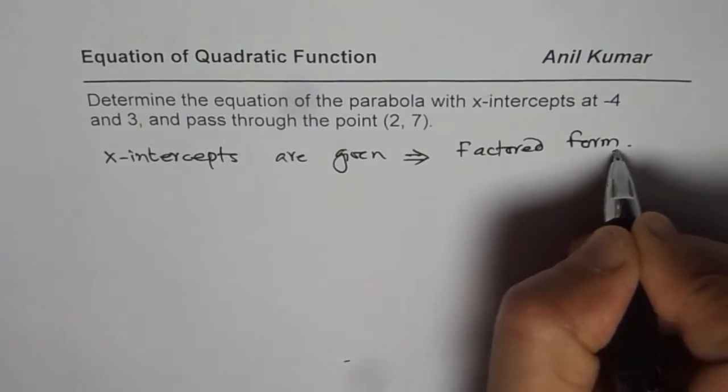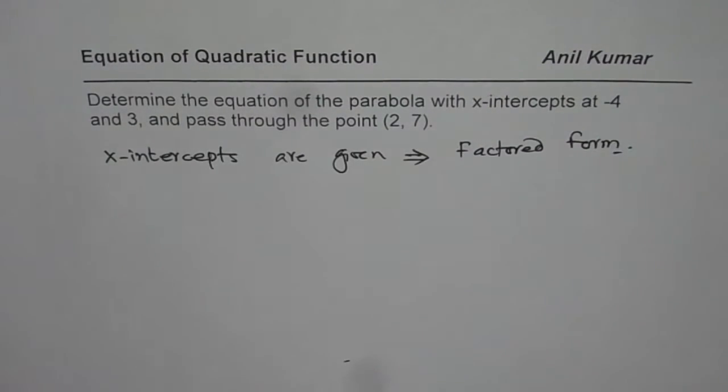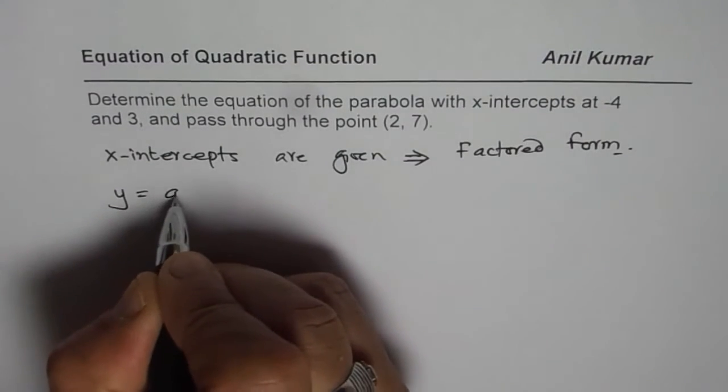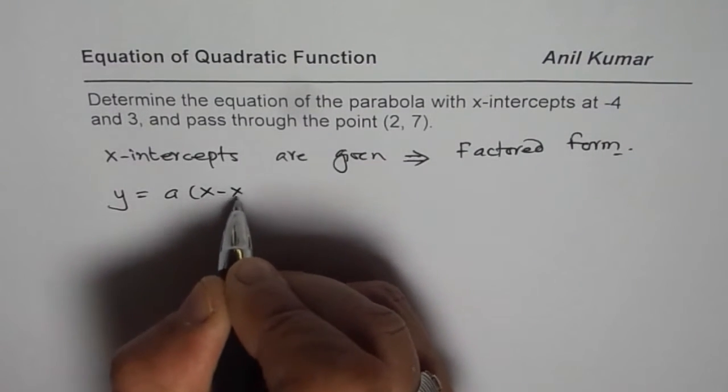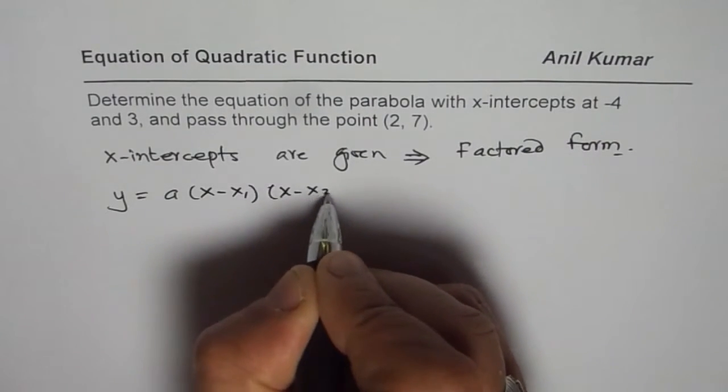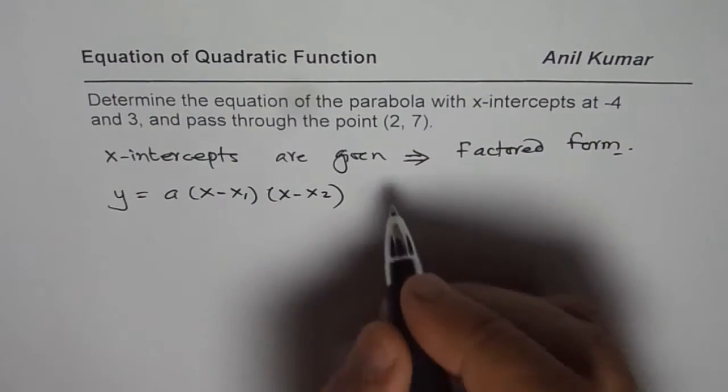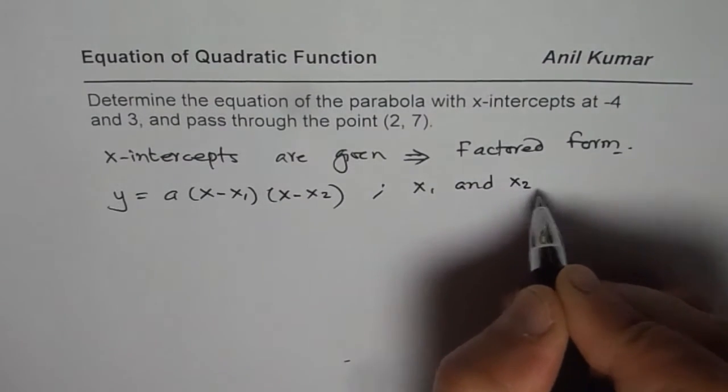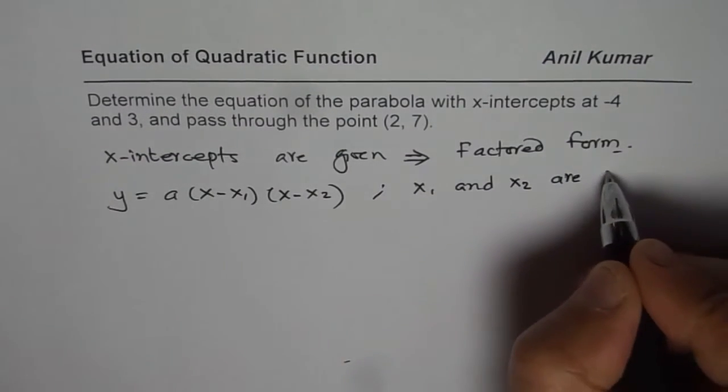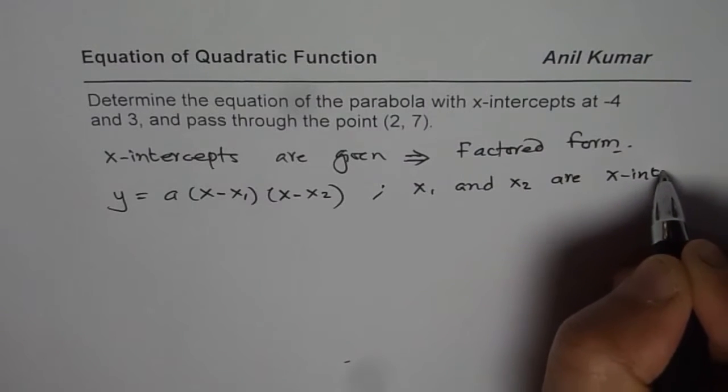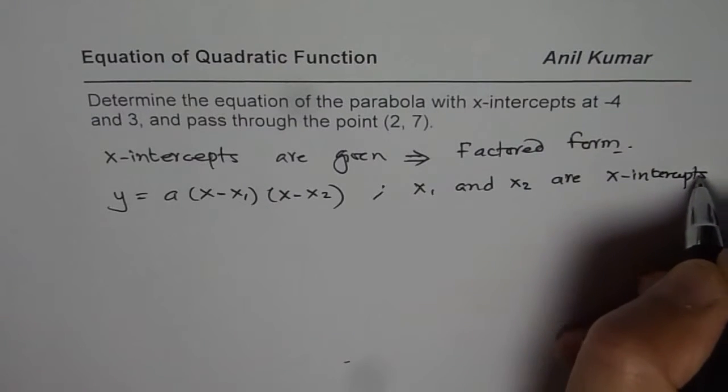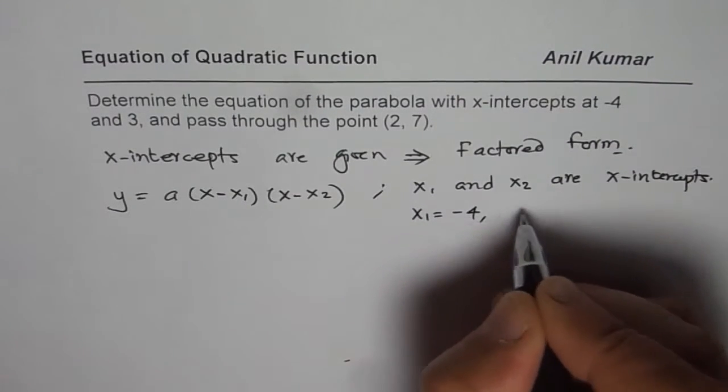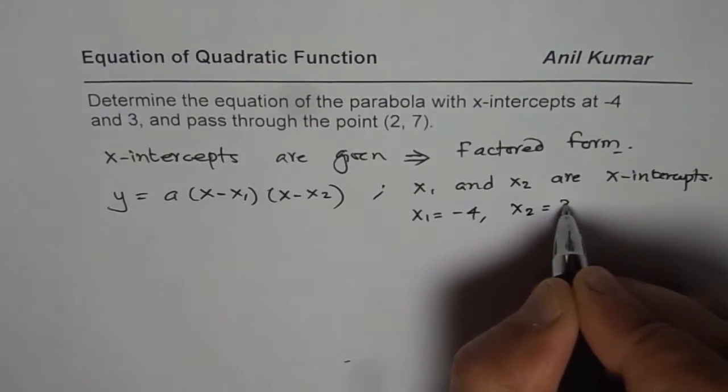That is the best to use in such circumstances. Factored form you can write as y equals A times (x minus x1) times (x minus x2), where x1 and x2 are x-intercepts. Now, in our case, x1 is equal to minus 4 and x2 is equal to 3.